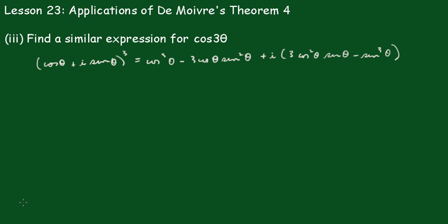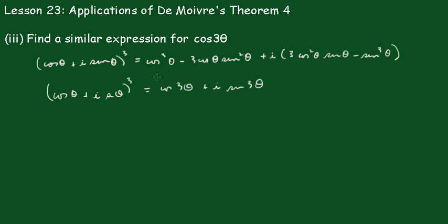In part 3, we find a similar expression for cos 3θ. We have (cosθ + i sinθ)³ equals the expanded result, and also (cosθ + i sinθ)³ = cos 3θ + i sin 3θ by De Moivre's Theorem. This time we select the real part and equate the real parts from both expressions.